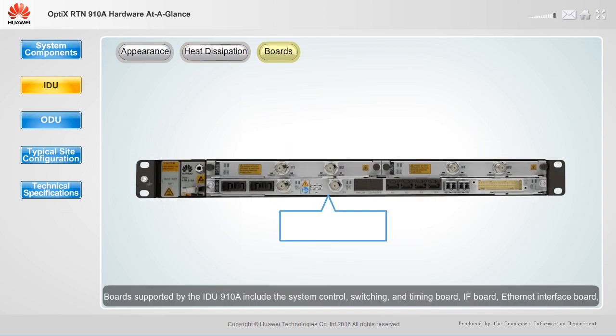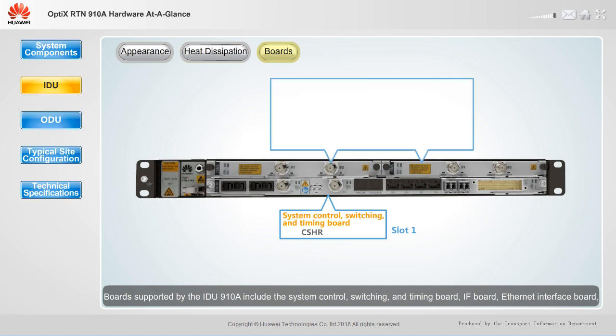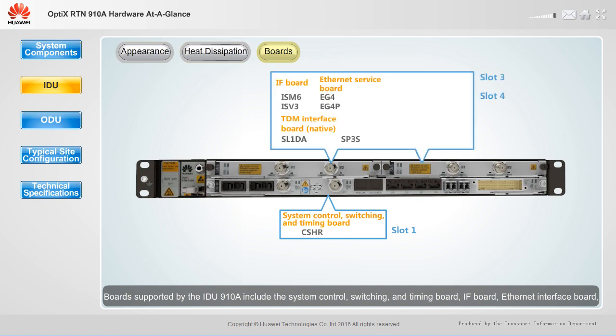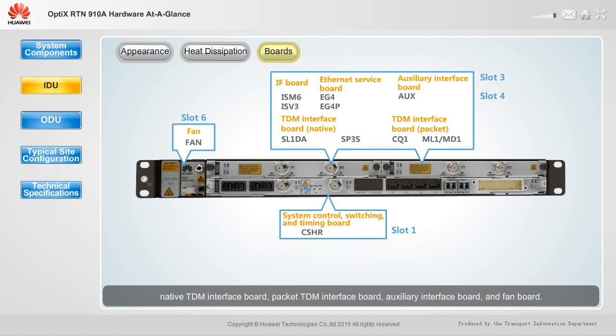Boards supported by the IDU910A include the system control, switching, and timing board, IF board, Ethernet interface board, native TDM interface board, packet TDM interface board, auxiliary interface board, and fan board. This makes the device suitable to various scenarios.